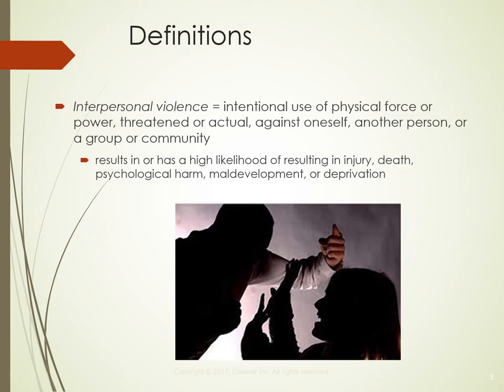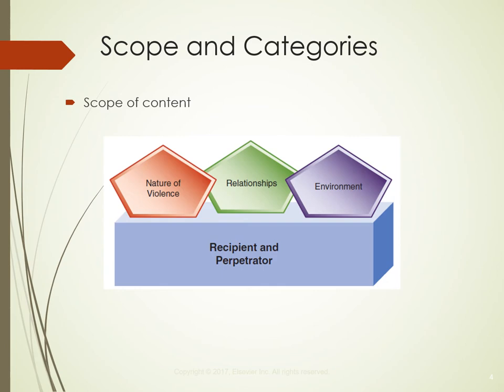The World Health Organization has categorized violence into three subtypes: self-directed violence, collective violence, and interpersonal violence. Interpersonal violence refers to violence between individuals and is the focus of this lecture. When considering interpersonal violence, one must consider the nature of the violence, the environment in which it occurs, the relationship between the perpetrator and the recipient, and possibly the motivation. One must not restrict themselves to the recipient of the violence but consider the perpetrator as well — they too are part of the public health problem.